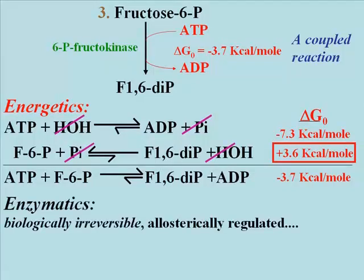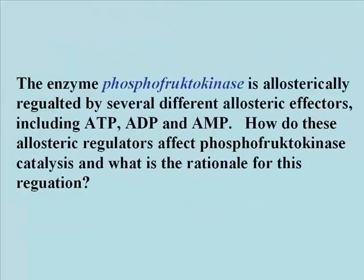The enzyme's properties include that it is biologically irreversible and that it is allosterically regulated. The list of allosteric regulators that can inhibit or stimulate phosphofructokinase includes ATP, ADP, and AMP, as well as citric acid and fatty acids.